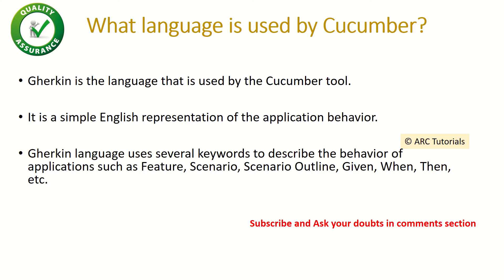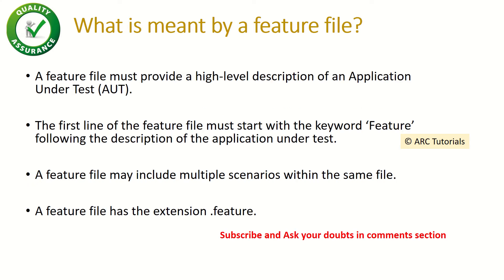The next question is: what do you mean by feature files? Feature files provide a high-level description of an application under test. The first line of the feature file must always start with the keyword 'feature' — that's how cucumber knows it's a feature file. A feature file may include multiple scenarios within the same file, and it has the extension .feature.